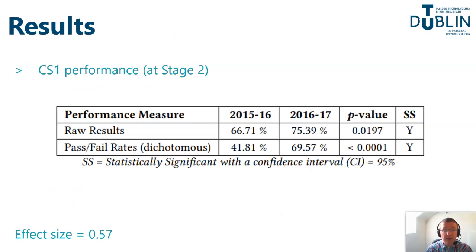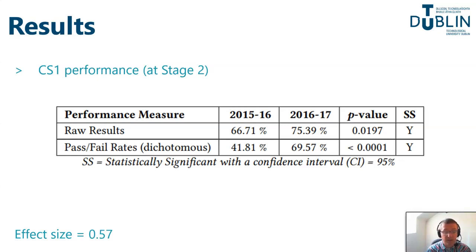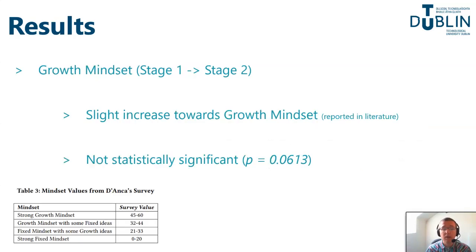The results between the intervention and the control cohort showed that the intervention cohort saw a significant increase in performance, both with raw results and dichotomous pass and fail. Effect size was also examined where Miller reports an effect size of 0.2 to be statistically significant; the effect size in this course between the intervention and control cohort was 0.57, which was very promising. We also investigated growth mindset change in the intervention group between stage one and stage two, and we did see a slight increase towards a growth mindset, but the difference was not statistically significant.